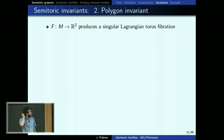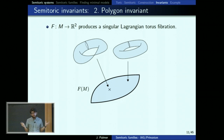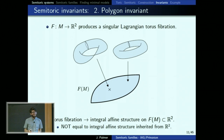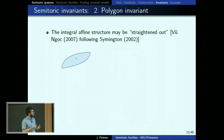Next is the polygon invariant. You have the momentum map F into R^2 whose image isn't necessarily a polygon. Just looking at the fibers, you get a Lagrangian torus fibration of M. Having a Lagrangian torus fibration gives you an affine structure on the base space — this idea goes back to Duistermaat. The reason things are so nice in the toric case is that the affine structure of the base equals the affine structure of R^N it sits in, so you can see all the data. In the semi-toric case there is an affine structure, but it's harder to extract data from.